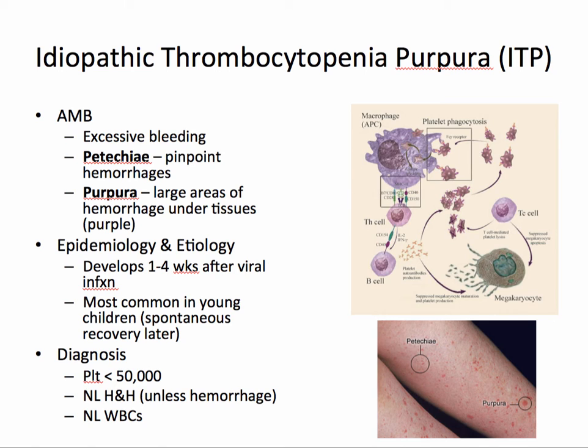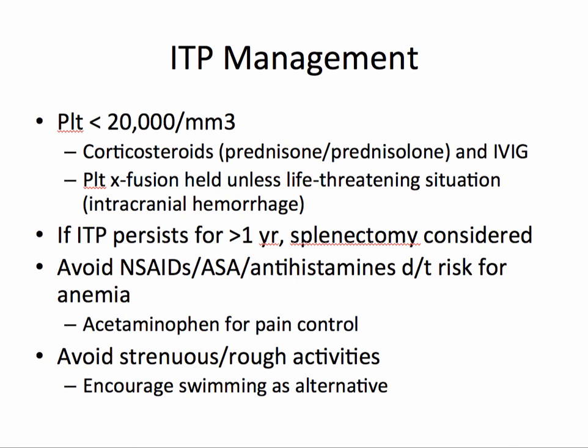In the labs, the hemoglobin and hematocrit are normal unless there's a hemorrhage, and white blood cells are normal; however, you'll notice a platelet count less than 50,000. If platelets drop below 20,000, corticosteroids — either prednisone or prednisolone — and IVIG, as well as platelet transfusion may be needed. If ITP persists for greater than one year, a splenectomy may be considered.